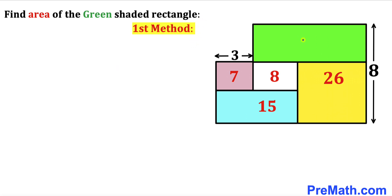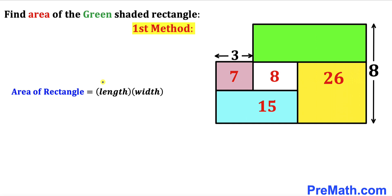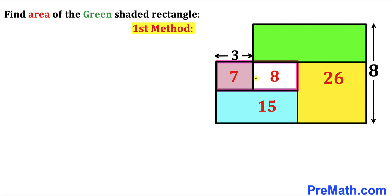Since we are interested in calculating the area of the green rectangle, let's recall the area of a rectangle formula: Area equals length times width. That means we are going to figure out the width and the length of this green rectangle.